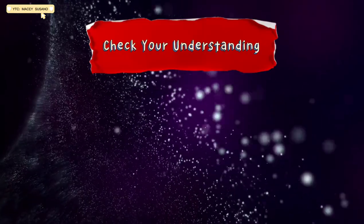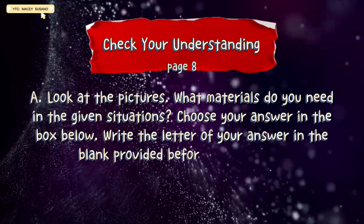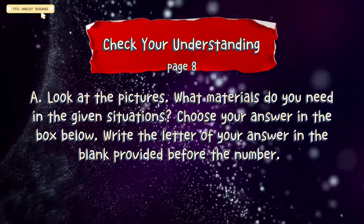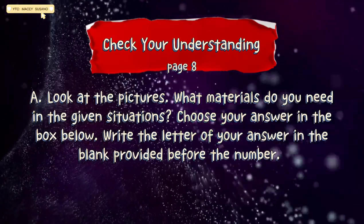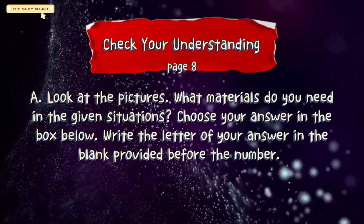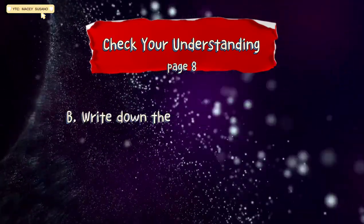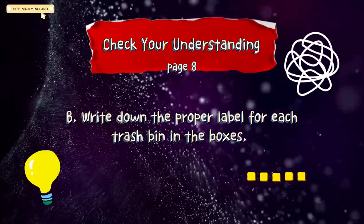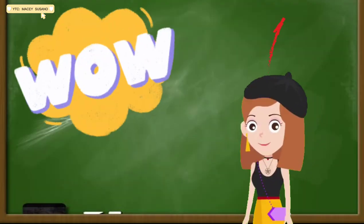This time, let me check your understanding. A. Look at the pictures. What materials do you need in the given situations? Choose your answer in the box below. Write the letter of your answer in the blank provided before the number. You may start now. B. Write down the proper label for each trash bin in the boxes. Were you able to answer all the five blanks? Very good!